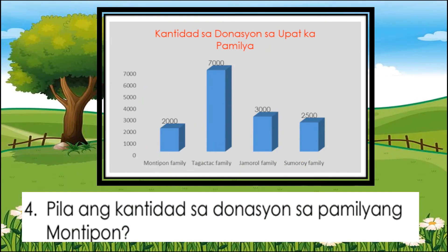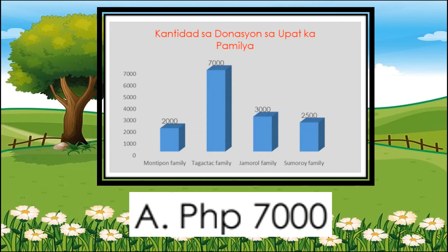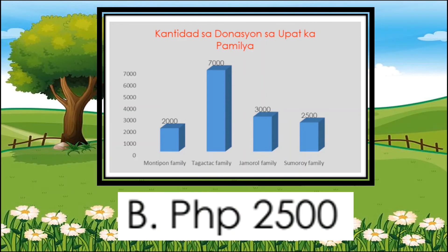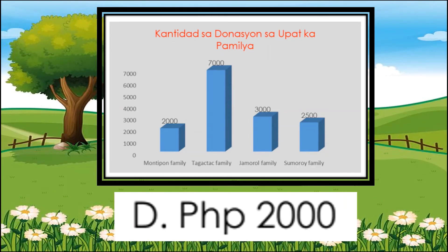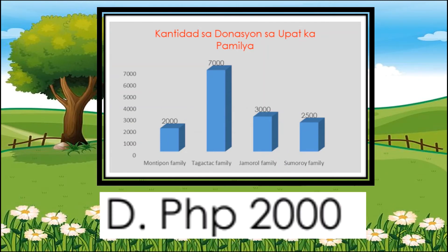Pila ang kantidad sa donasyon sa pamilyang Montipon? A. P7,000 pesos. B. P2,500 pesos. C. P3,000 pesos. O D. P2,000 pesos. Ang letrang D ang tubag.